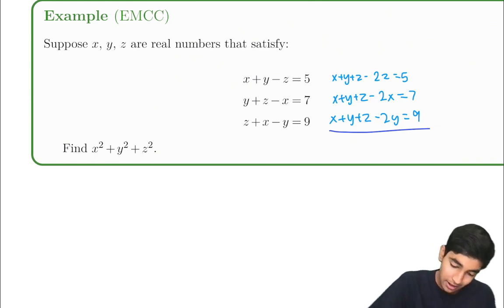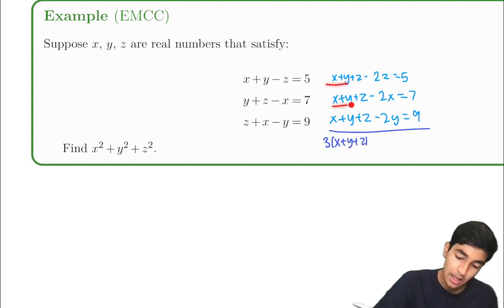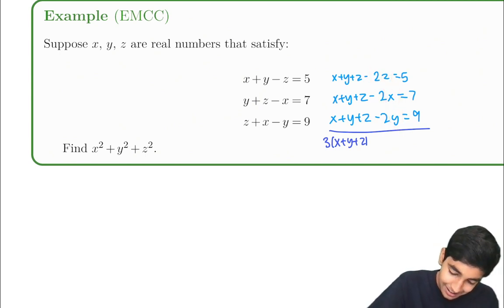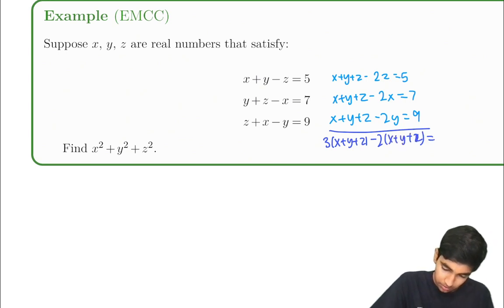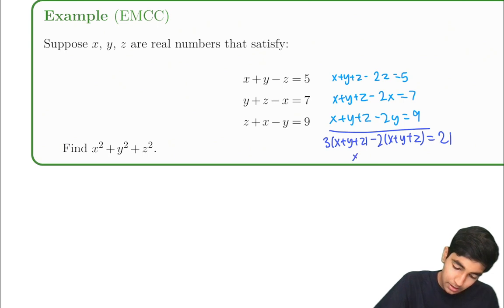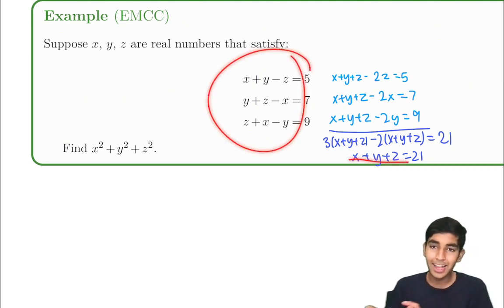Adding all three equations gives us 3 times (x plus y plus z), then minus 2 times (x plus y plus z). That equals 5 plus 7 plus 9, which is 21. So x plus y plus z equals 21. We just added the three equations and were left with such a nice, simple expression.